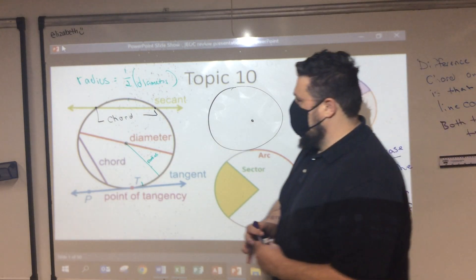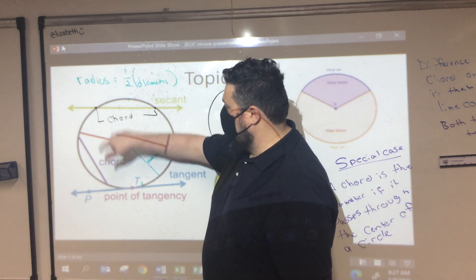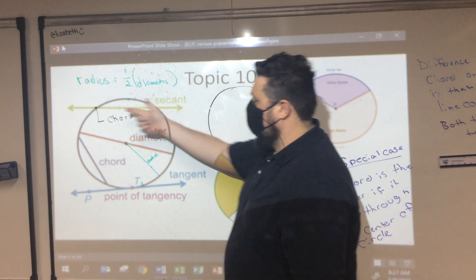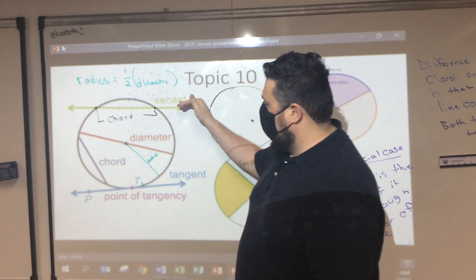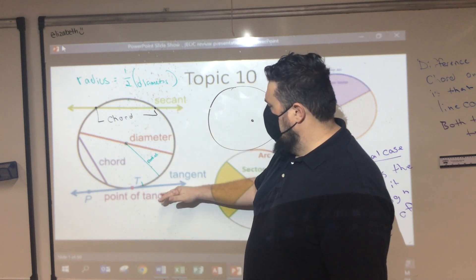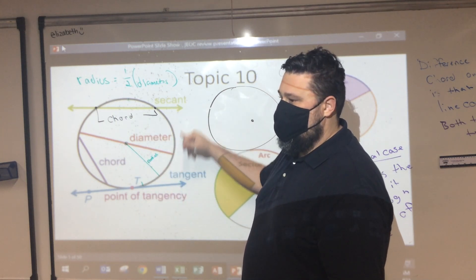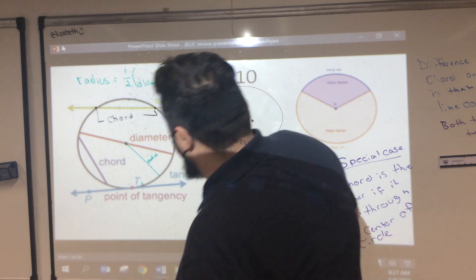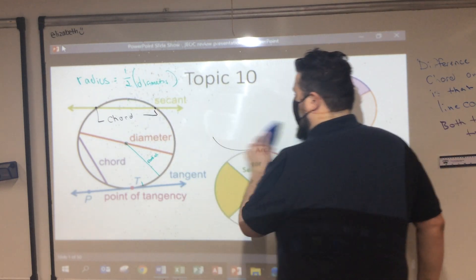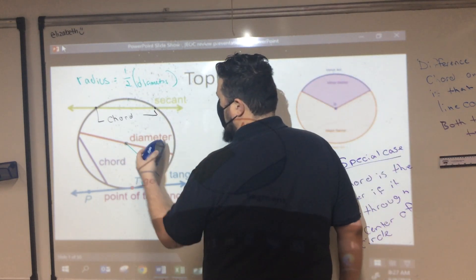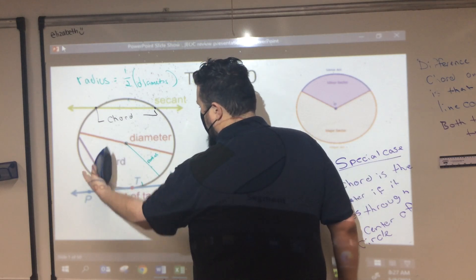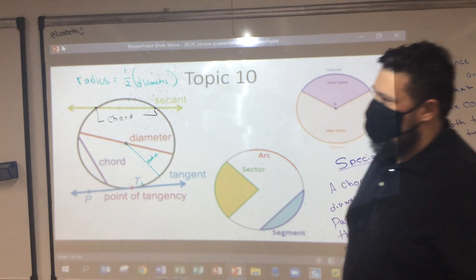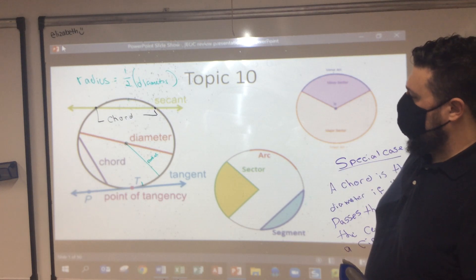A secant line and a chord, functionally on the inside of a circle, are the same thing. It's just that we know the secant line continues forever. We're going to get to the tangent line and why that's a little different from the secant line. In geometry we don't deal too much with the secant line, other than to help us see the difference between a chord and a tangent line.